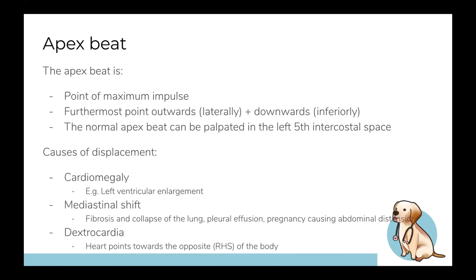The apex beat is the point of maximum impulse, usually palpated in the left fifth intercostal space. If it can't be felt or is displaced on examination, the main reasons are cardiomegaly — where the heart has enlarged due to a pathological cause and the apex beat has moved to another location — or dextrocardia, where the heart points in the opposite direction, reflected on the right-hand side.